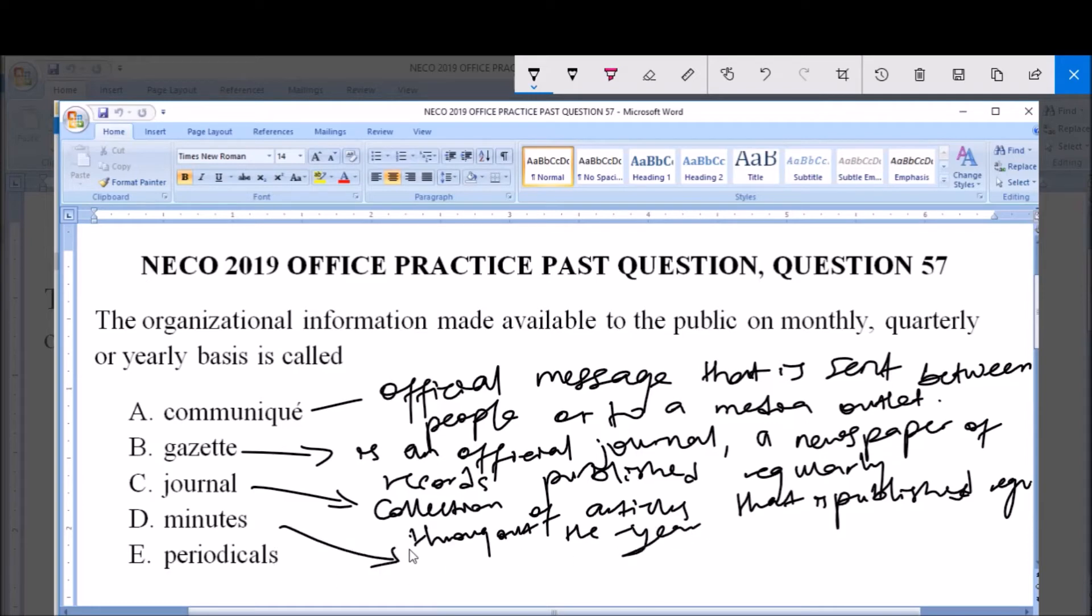Now, this is minutes. Minutes is written records of everything that happened in a meeting. That is the written records of all events in a meeting.